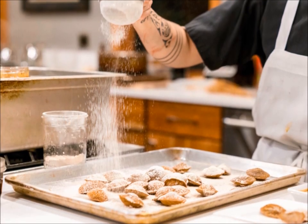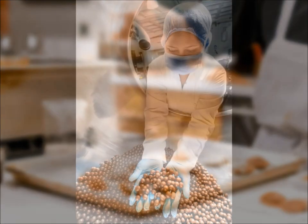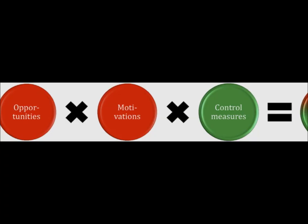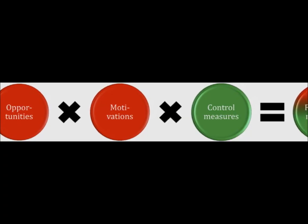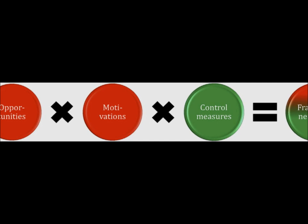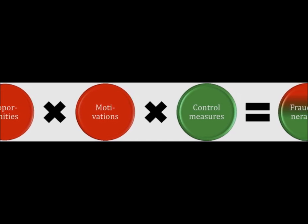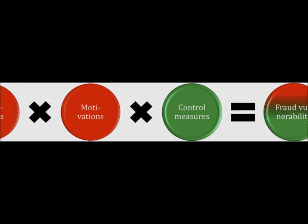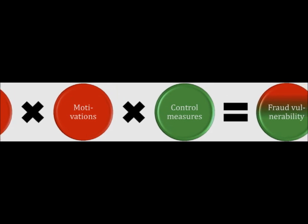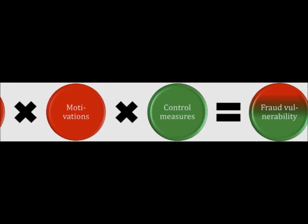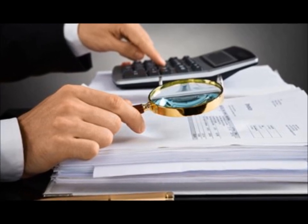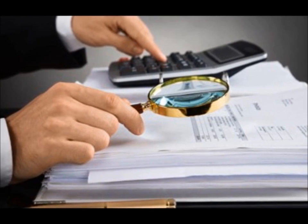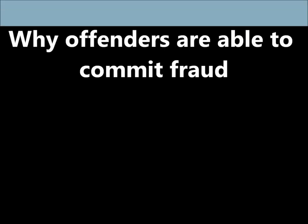Food fraud generally occurs where the potential for and the temptation of food fraud are high, and the risk of getting caught and sanctions are low. Simply put, the combination of opportunities (or suitable target), motivations (or motivated offender), and inadequate control measures (or guardianship) results in fraud. This is the science-based framework for understanding food fraud risk — by analyzing these three aspects, you can estimate the food fraud vulnerability for any food product or ingredient.